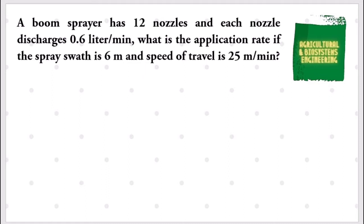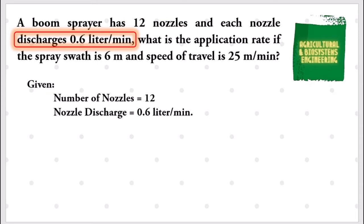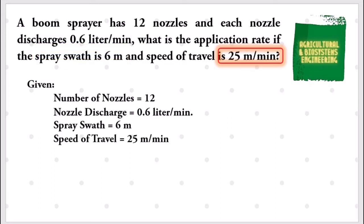The very first thing that we are going to identify are the given. First, the number of nozzles which is 12. The nozzle discharge of 0.6 liters per minute. Third, our spray swath of 6 meters. And finally, the speed of travel of 25 meters per minute.